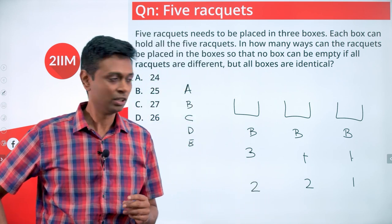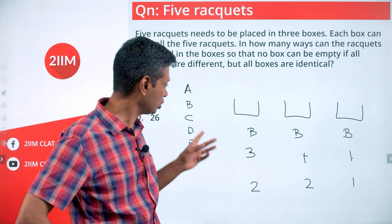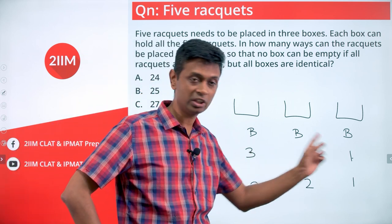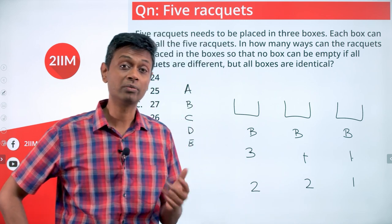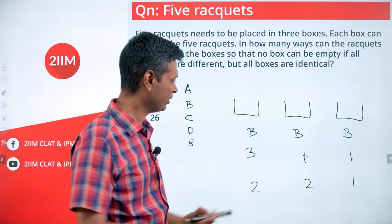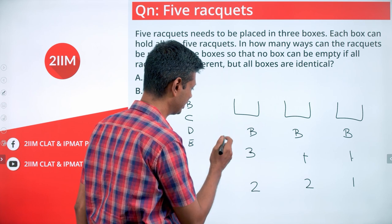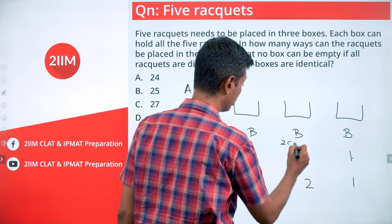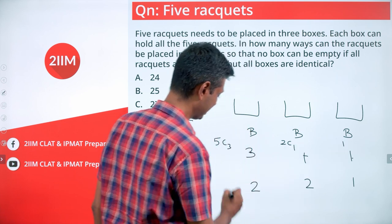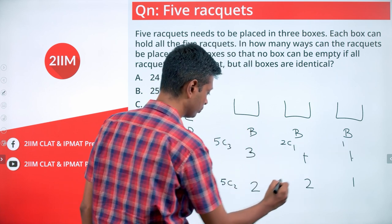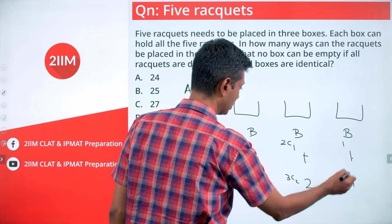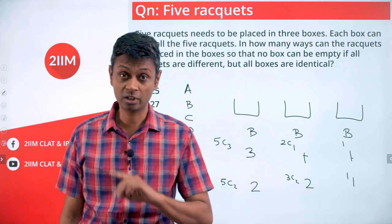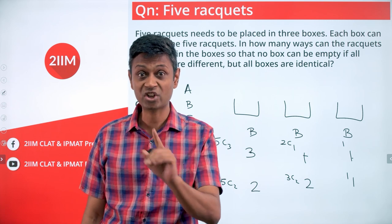For the 3-1-1 distribution, we need to put three rackets in one box, one in the second, and one in the third. How many ways can we do that? Out of five, select three: 5C3. Out of the remaining two, select one: 2C1. The last one is just 1. Likewise for 2-2-1: 5C2, then 3C2, then the last one is 1.